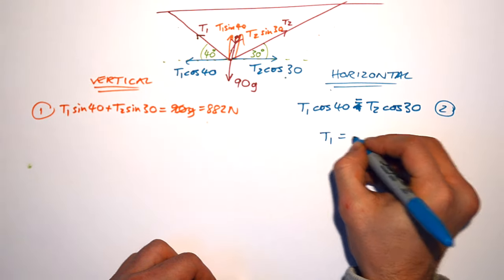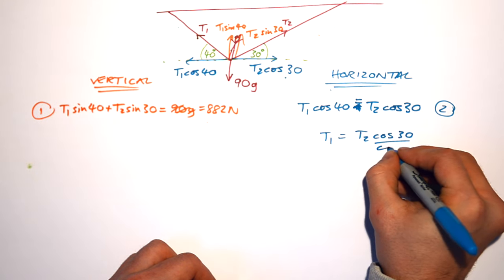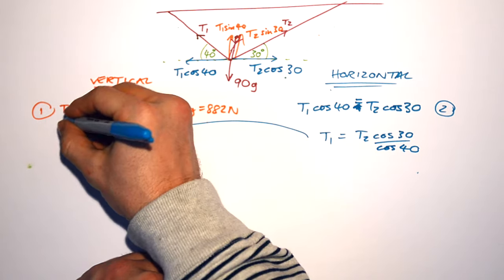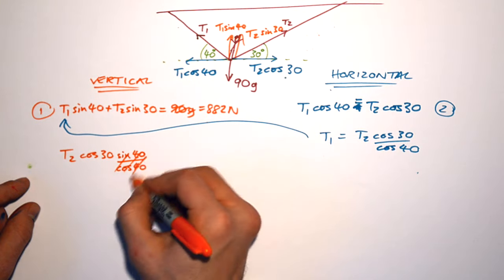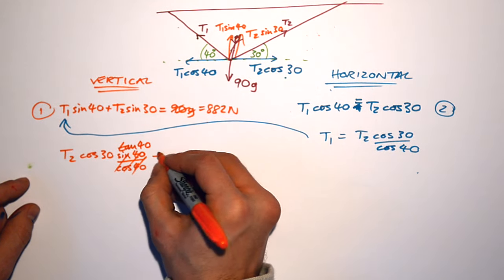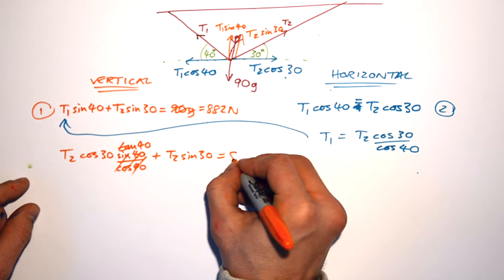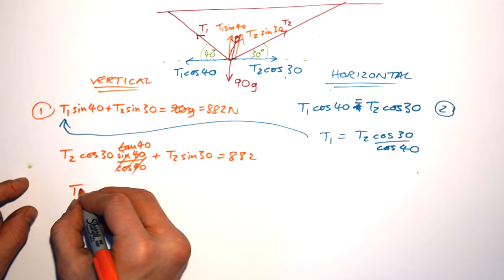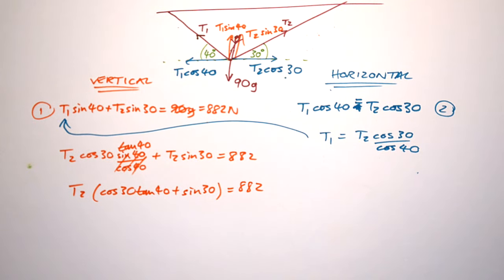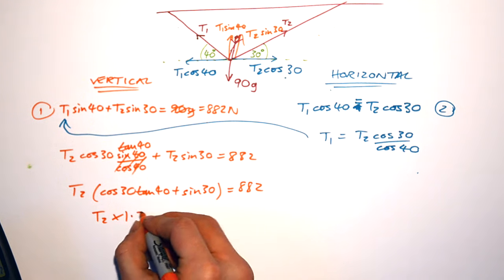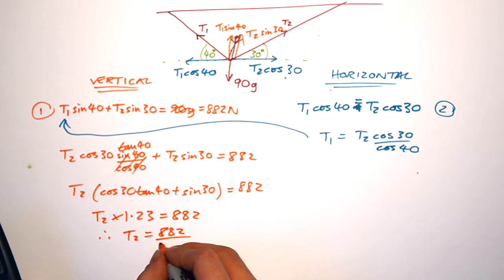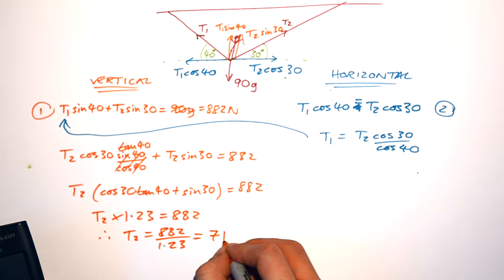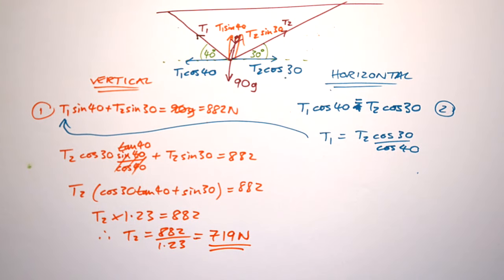Rearranging equation 2: T1 = T2 cos 30 / cos 40. Substituting into equation 1 gives T2 times (cos 30 sin 40 / cos 40) + T2 sin 30 = 882. The sin 40 / cos 40 simplifies to tan 40. Factorising for T2 gives T2 times (tan 40 cos 30 + sin 30) = 882. Evaluating the bracket gives approximately 1.23, so T2 = 882 / 1.23 = 719 Newtons.